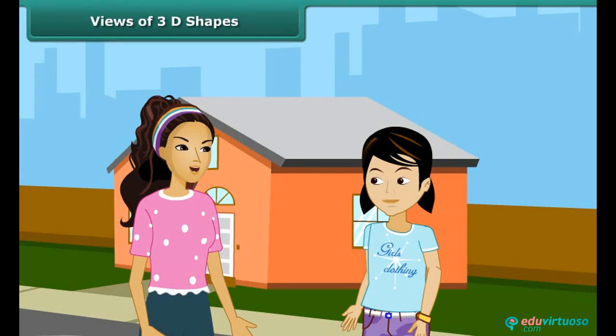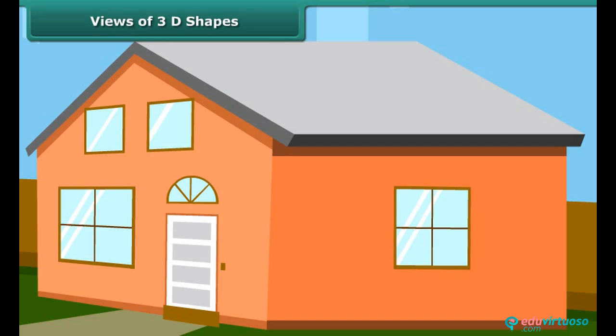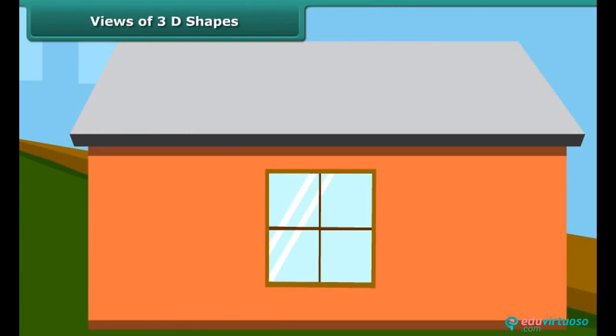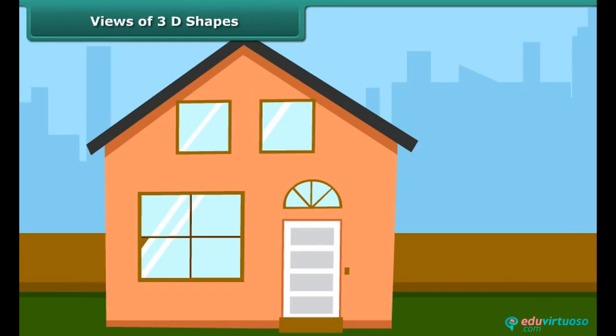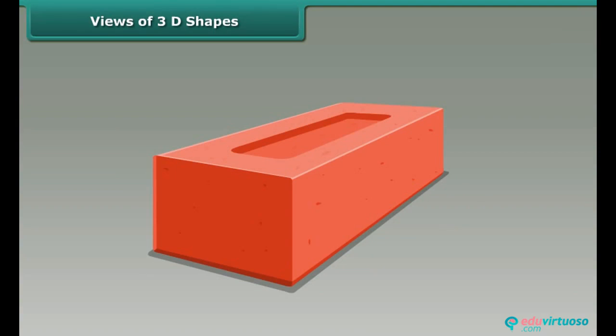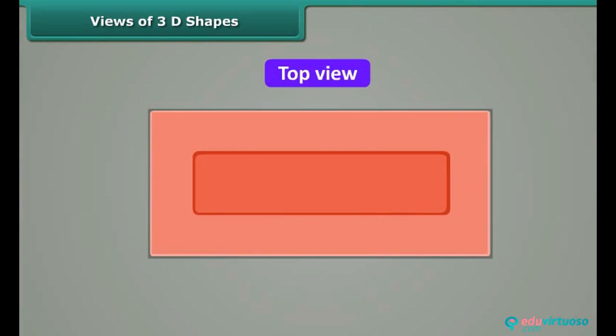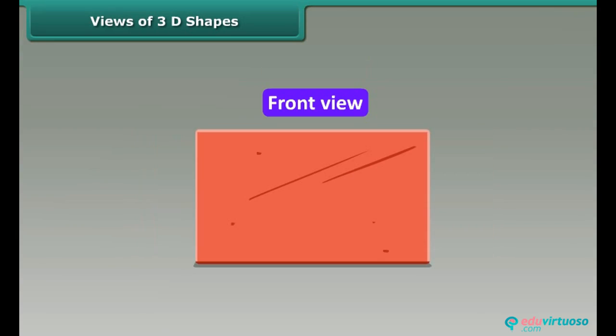Rita, do you know that three-dimensional objects look different from different positions? How? Look at our house. It can have many views. This is the side view of the house. This is the front view. And this is the top view. Similarly, this brick can have different views: top view, side view and front view.